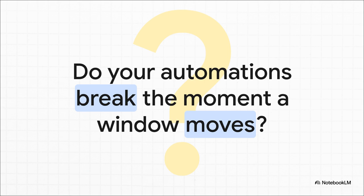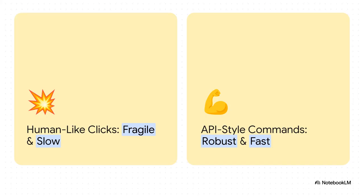It really all boils down to two very different ways of thinking. Over here you have the human-like clicks — they seem easy at first, but they are fragile and pretty slow. And on the other side, you've got what we call API-style commands. These are robust, they're fast, and they are the secret to professional-level automation. Getting this one difference is everything.